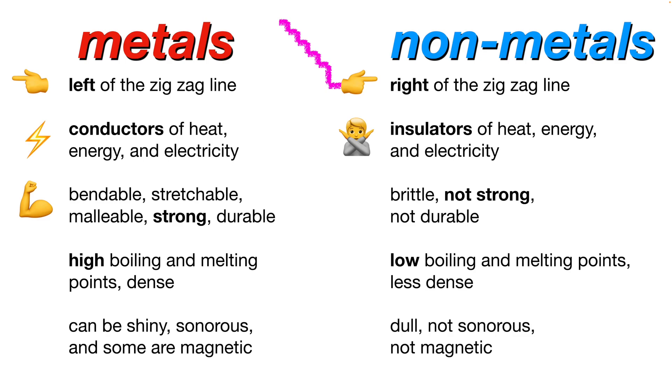Non-metals are the opposite. Brittle, not strong, not durable. Metals have high boiling and melting points. They're very dense materials. Non-metals have low melting and boiling points, and they're less dense, less tightly packed.